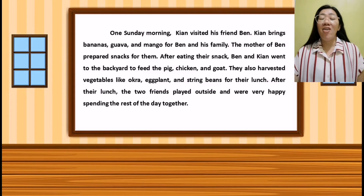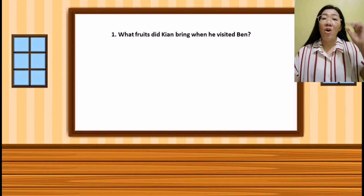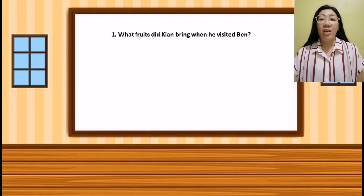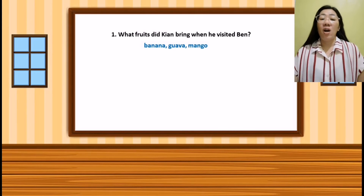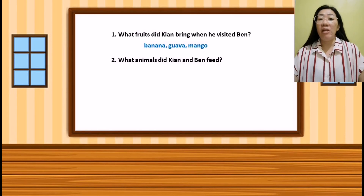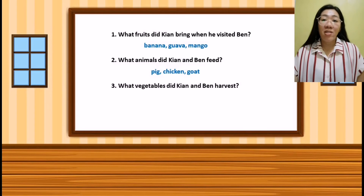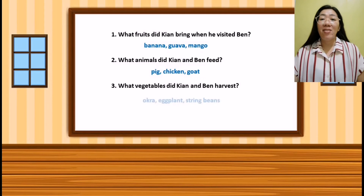Very good. Now I have here some questions. Our first question: what fruits did Kian bring when he visited Ben? Kian brings banana, guava, and mango. Next, what animals did Kian and Ben feed? They fed pig, chicken, and goat. Next question: what vegetables did Kian and Ben harvest? They harvested okra, eggplant, and string beans.